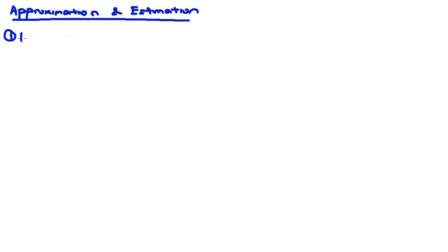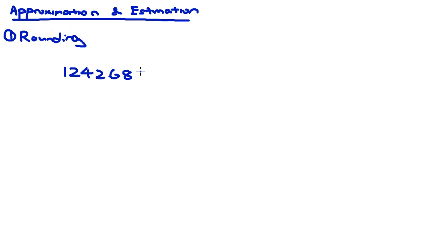In this video, we're going to look at approximation and estimation, and the first technique we are going to learn is something called rounding. So what is rounding? Let's start with an example. Say we have the number 1242.689 — a number with lots of digits — and the question asks you to round off to the nearest hundred.